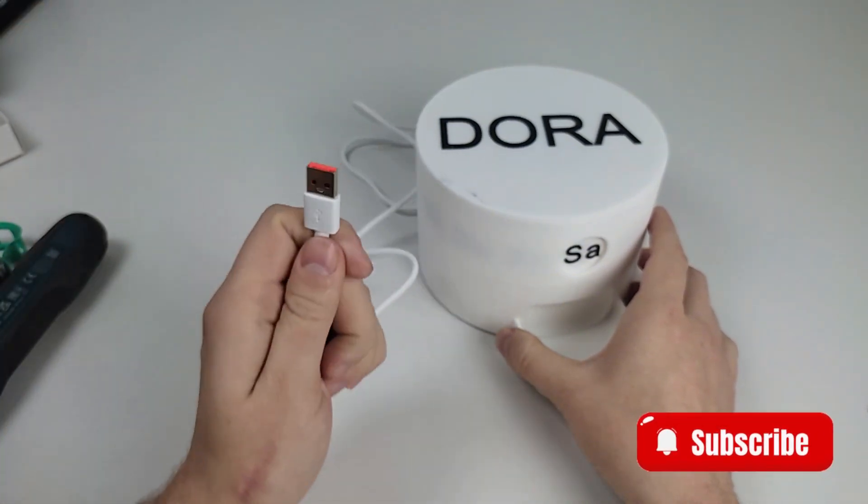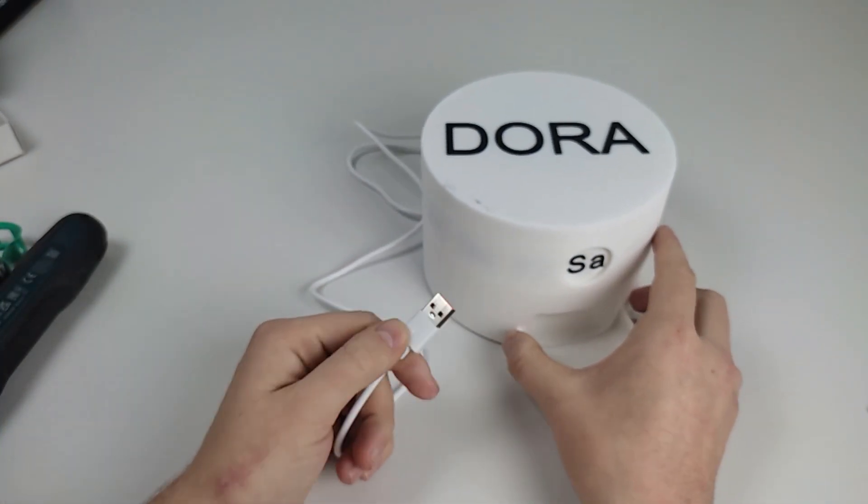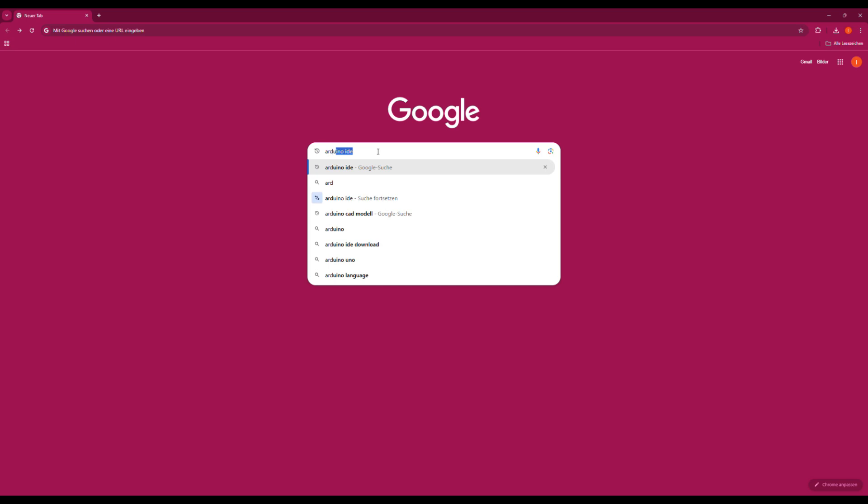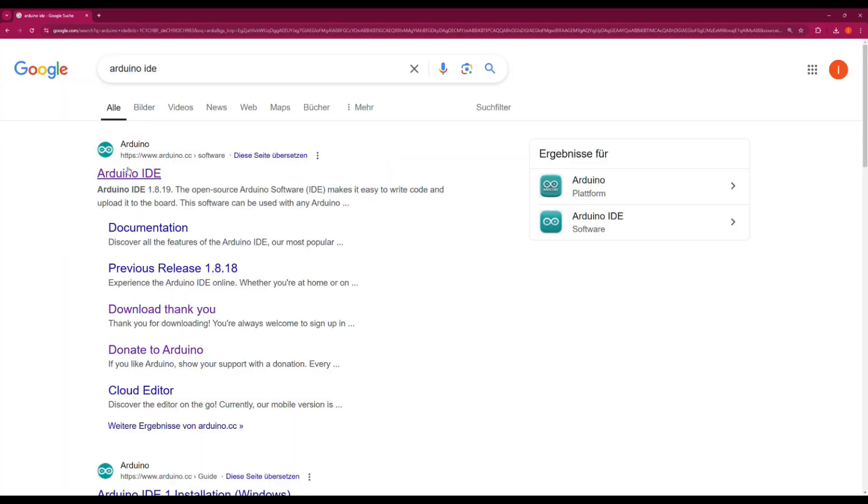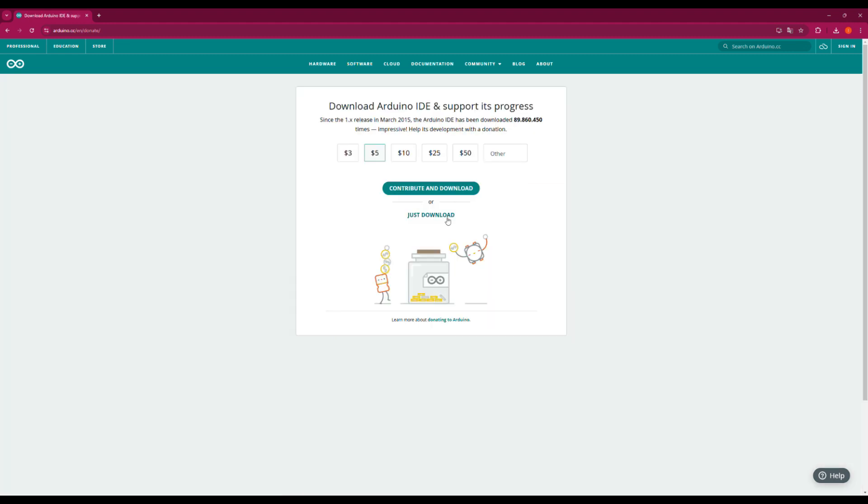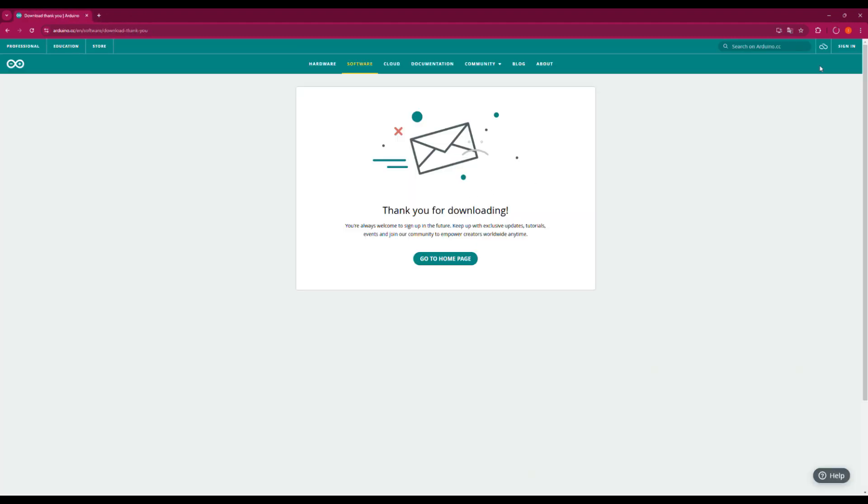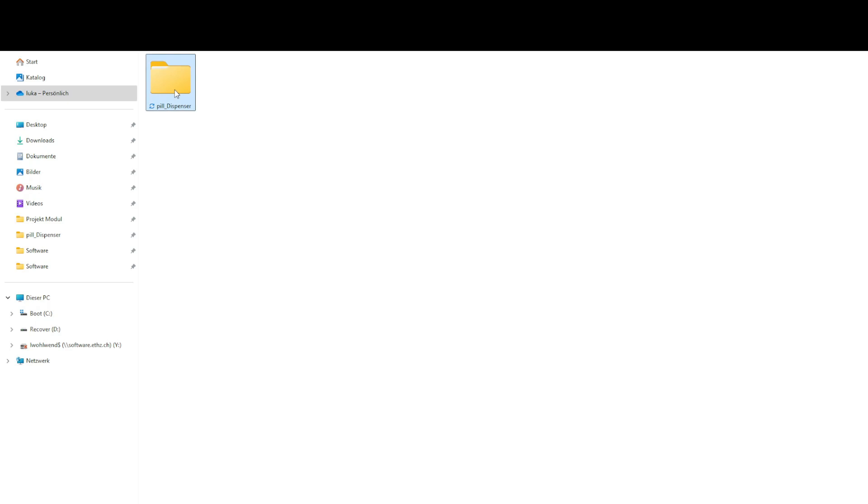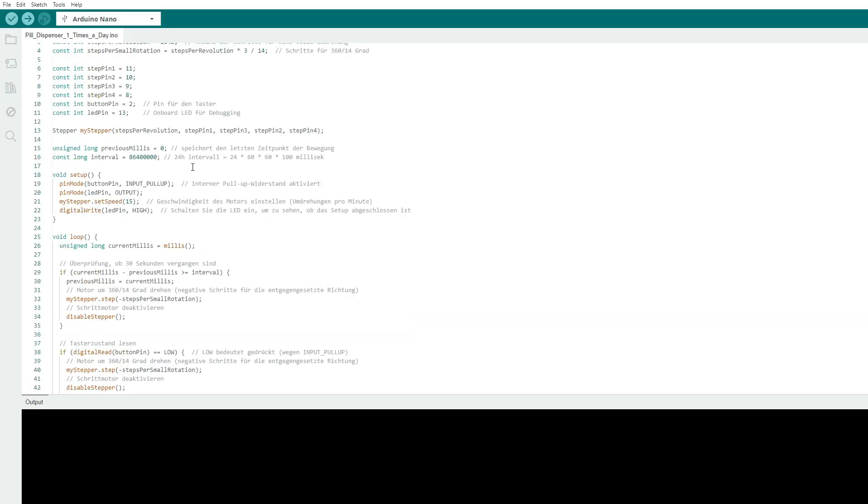Connect the Arduino Nano to your computer using a USB-C cable. Download the Arduino IDE from the official website. The link is in the description. After installation, open the code in the IDE. Choose between once or twice a day. Each program is commented for easy adjustments. Need help? Ask in the comments.